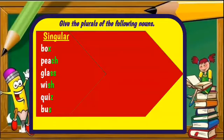Notice the ending of the word box, peach, glass, wish, quiz, and bus. Let's form the plural. So box becomes boxes plural because of the x we add es.